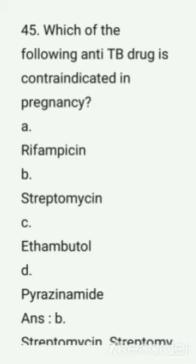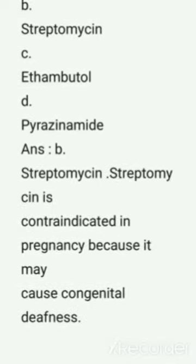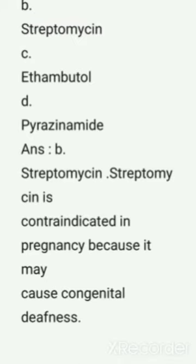Question number 45: Which of the following anti-TB drugs is contraindicated in pregnancy? Options are: A) rifampicin, B) streptomycin, C) ethambutol, D) pyrazinamide. Correct answer: option B — streptomycin is contraindicated in pregnancy because it may cause congenital deafness.